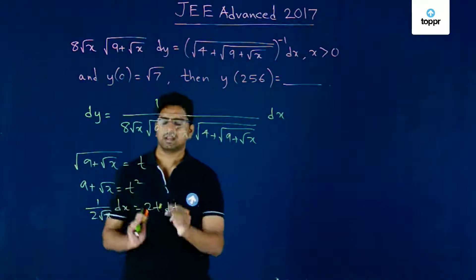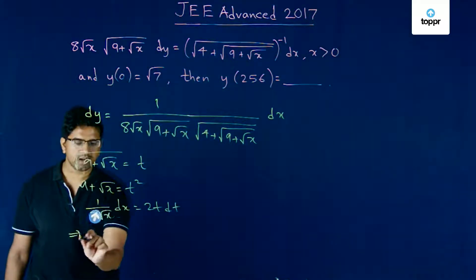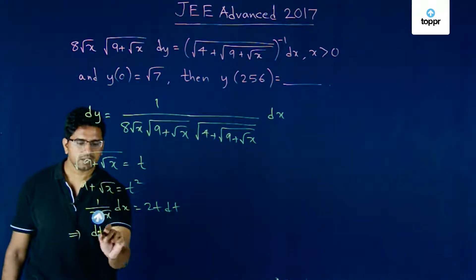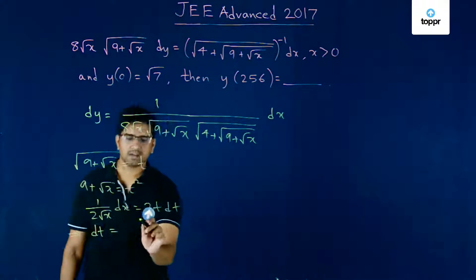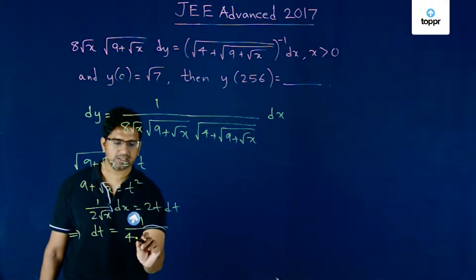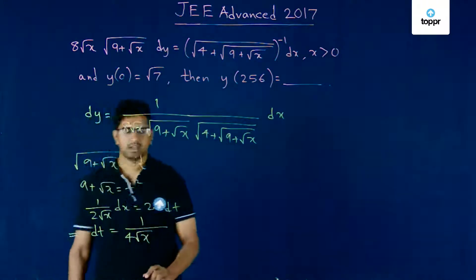The relationship is clearly 1 by 2 root x times dx equals 2t times dt. We are getting the required thing.